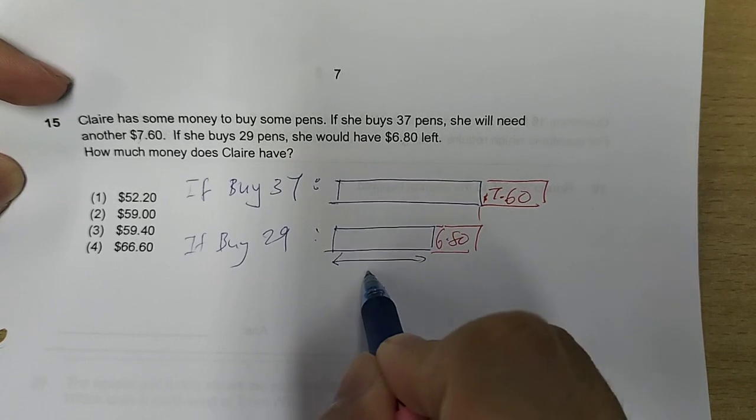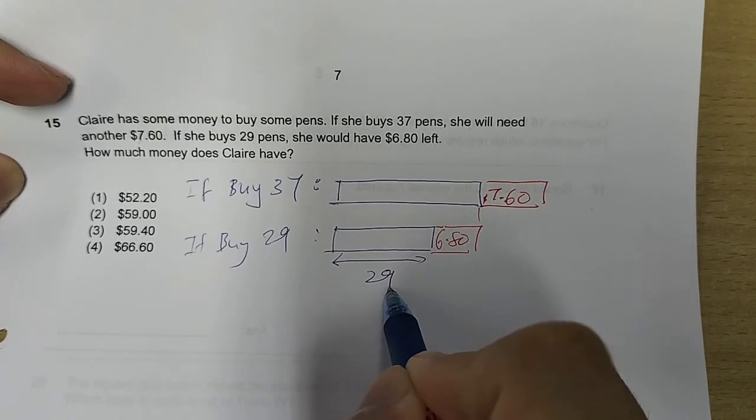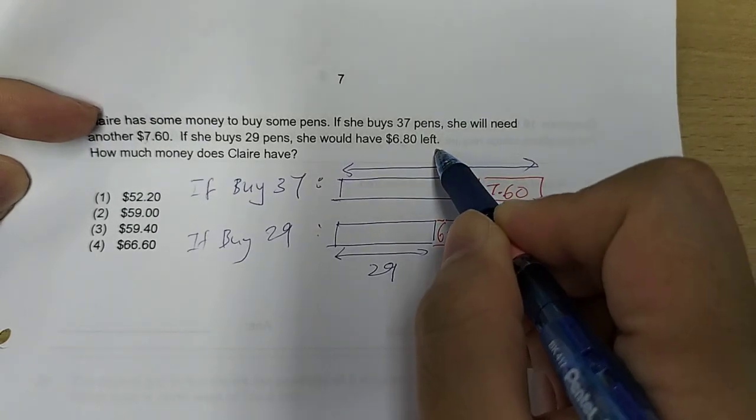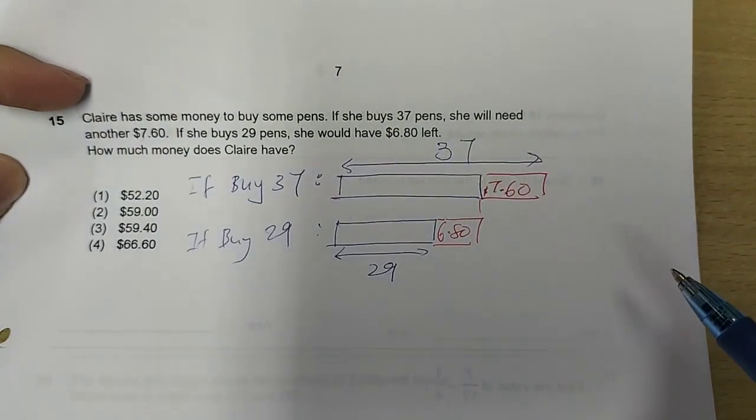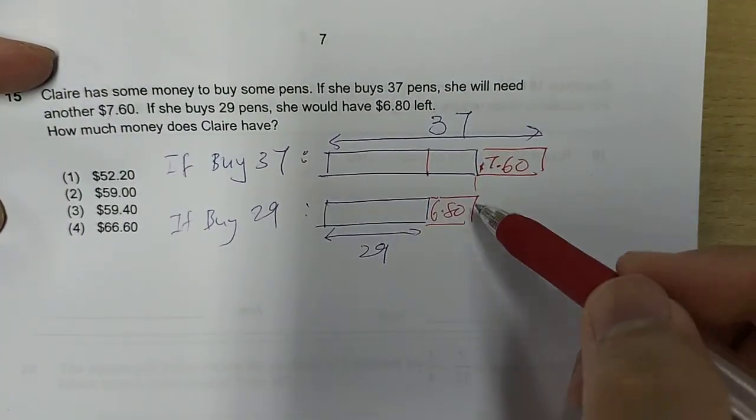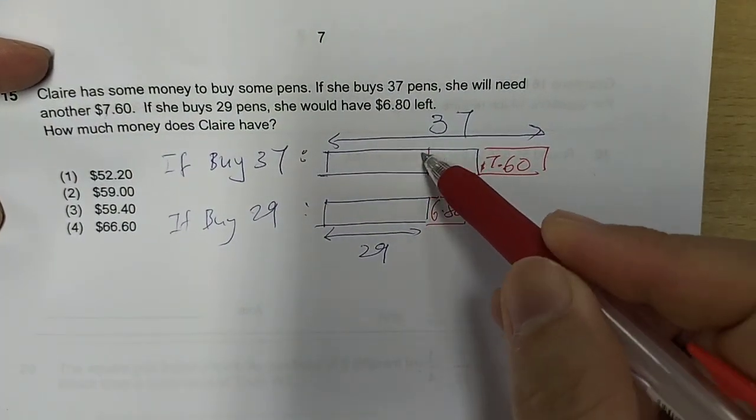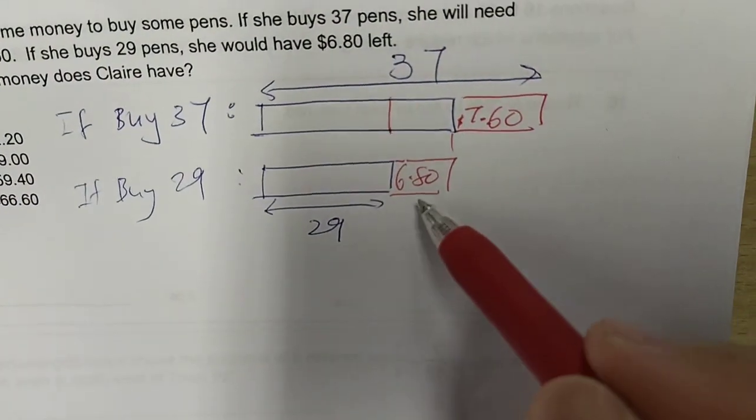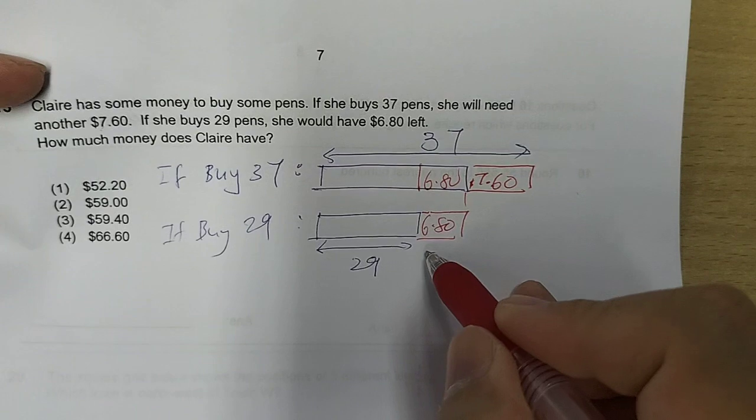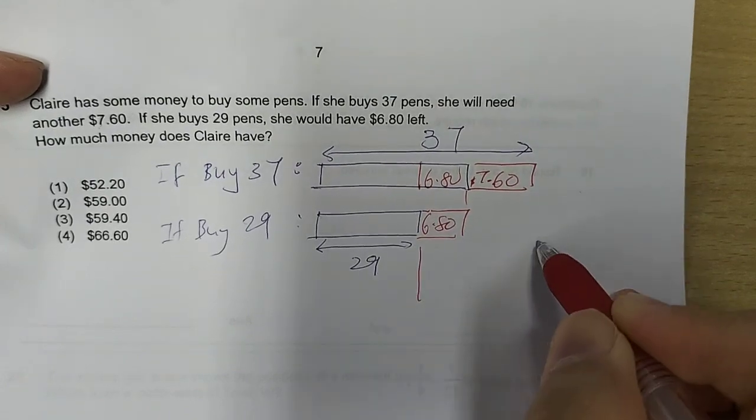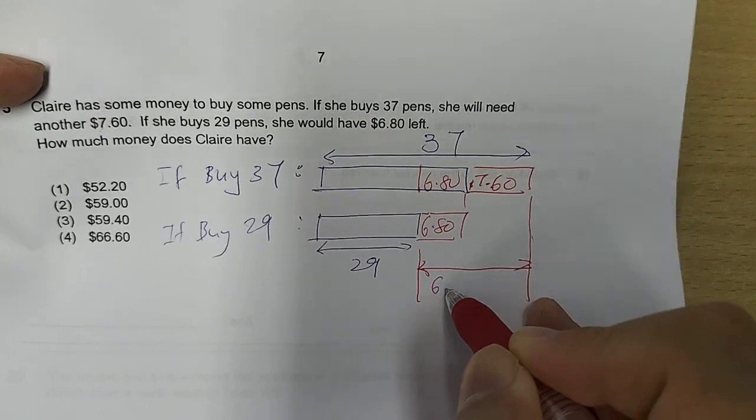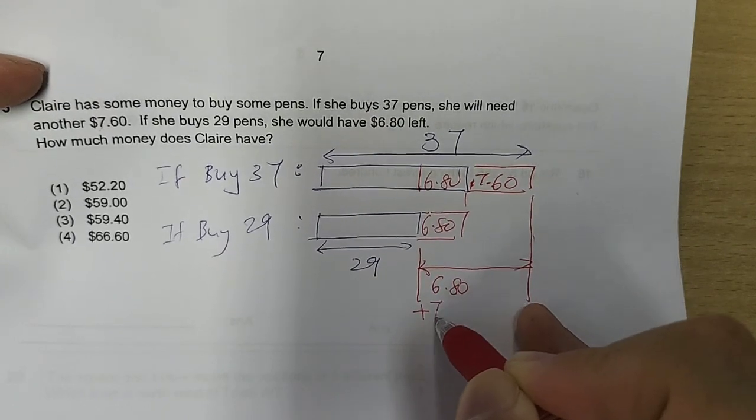Take note. So, this one will be 29 pens. And this will be 37 pens. Now, if you look up here, what is the value of this empty unit here? It would be the same as this, right? $6.80. In other words, if you look at just this portion. This is actually 6.80 plus 7.60. And that will be $14.40.